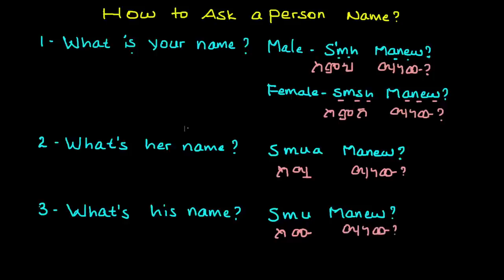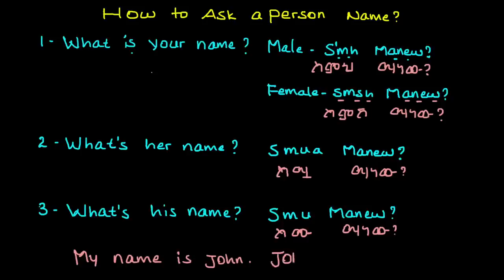You may ask how to answer this question properly. If someone asks 'what is your name,' you can answer by saying 'my name is John.' In Amharic, you say 'John a Bala Lowe.' Simply put your name first, then the expression 'a Bala Lowe' — so it reads: John a Bala Lowe.